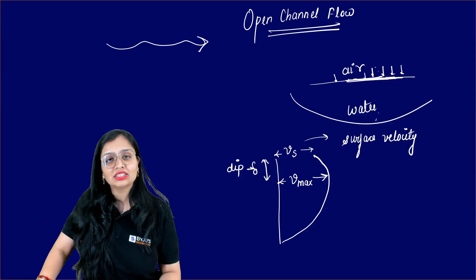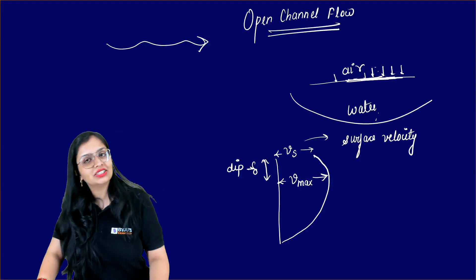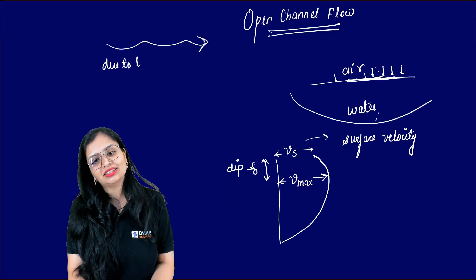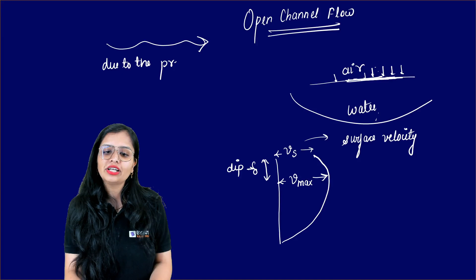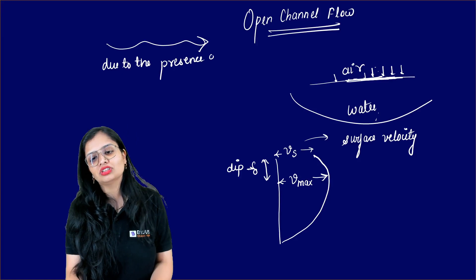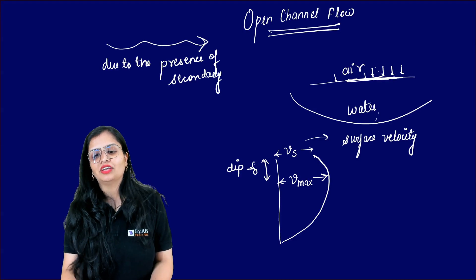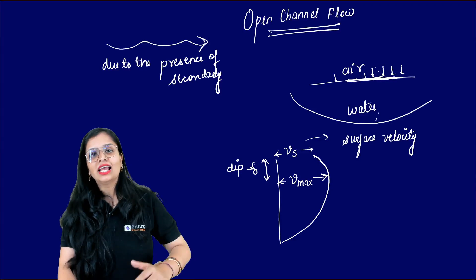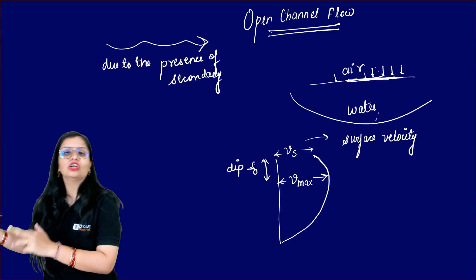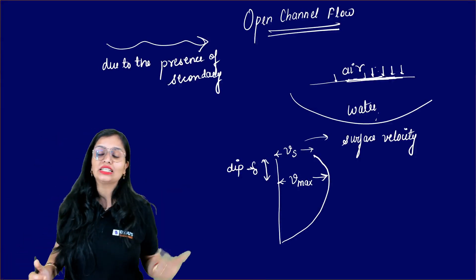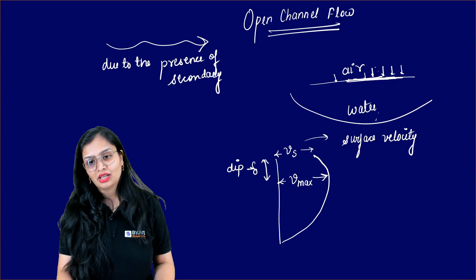So in short, if somebody asks why does it not occur at the surface, the maximum velocity, you will say it is due to the presence of secondary currents. Because whenever cuts and bends are there, you will see that although water is traveling in the longitudinal direction, in those places you will see the water flow in the normal direction as well.